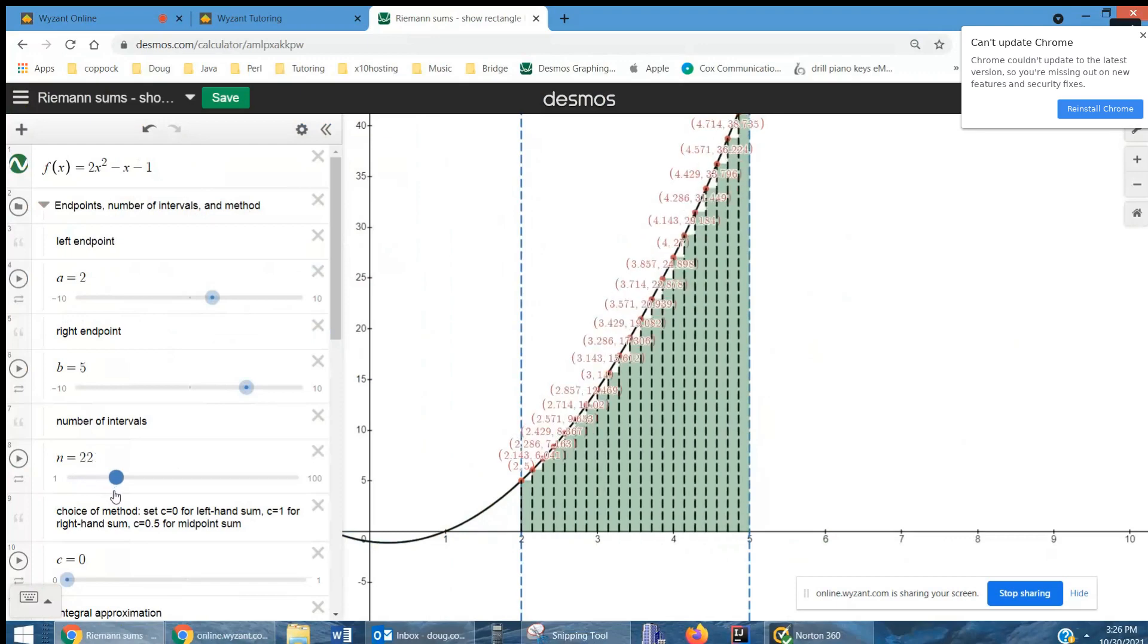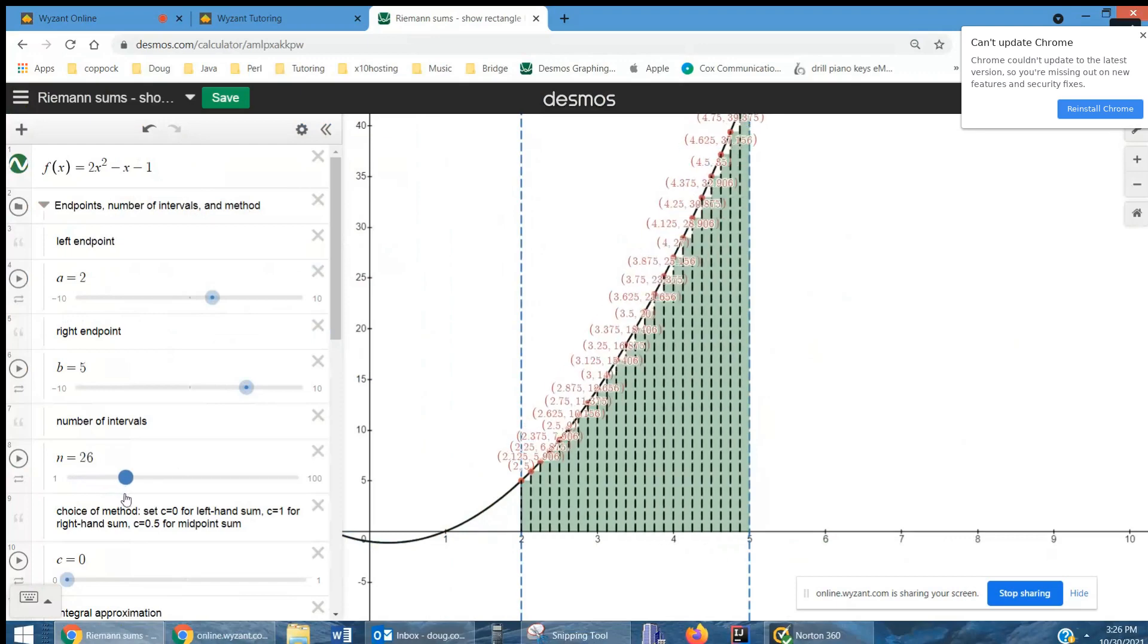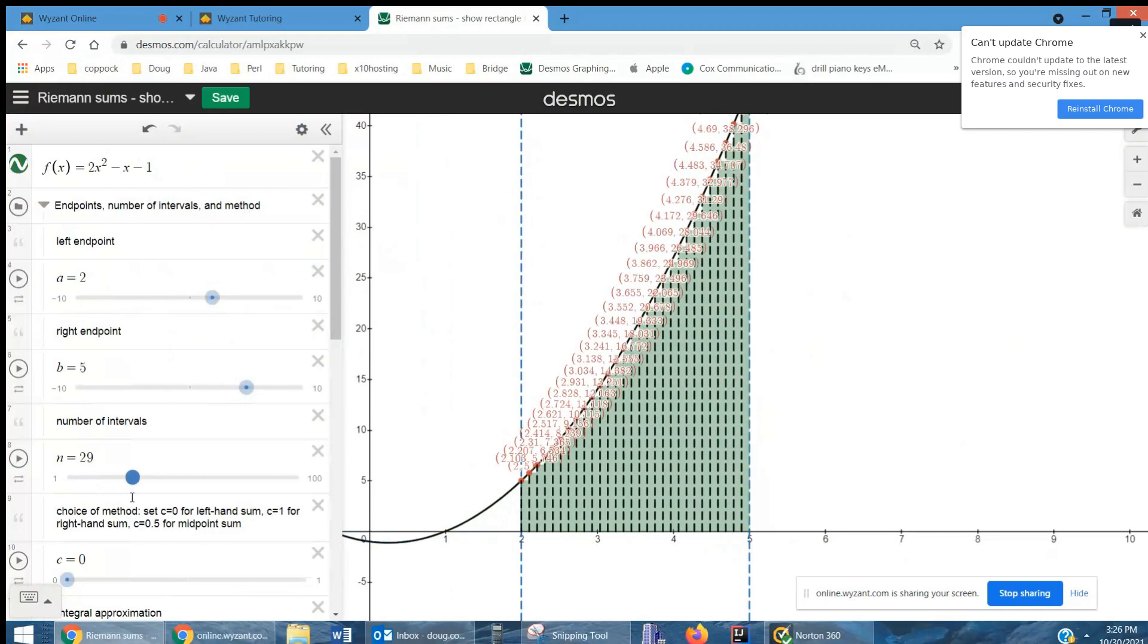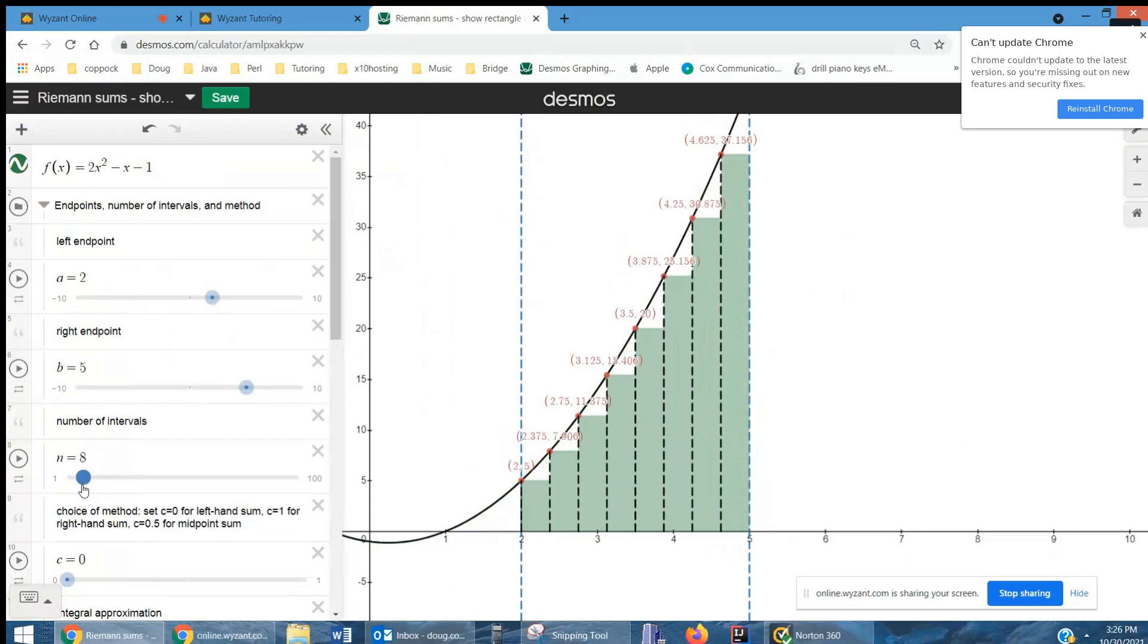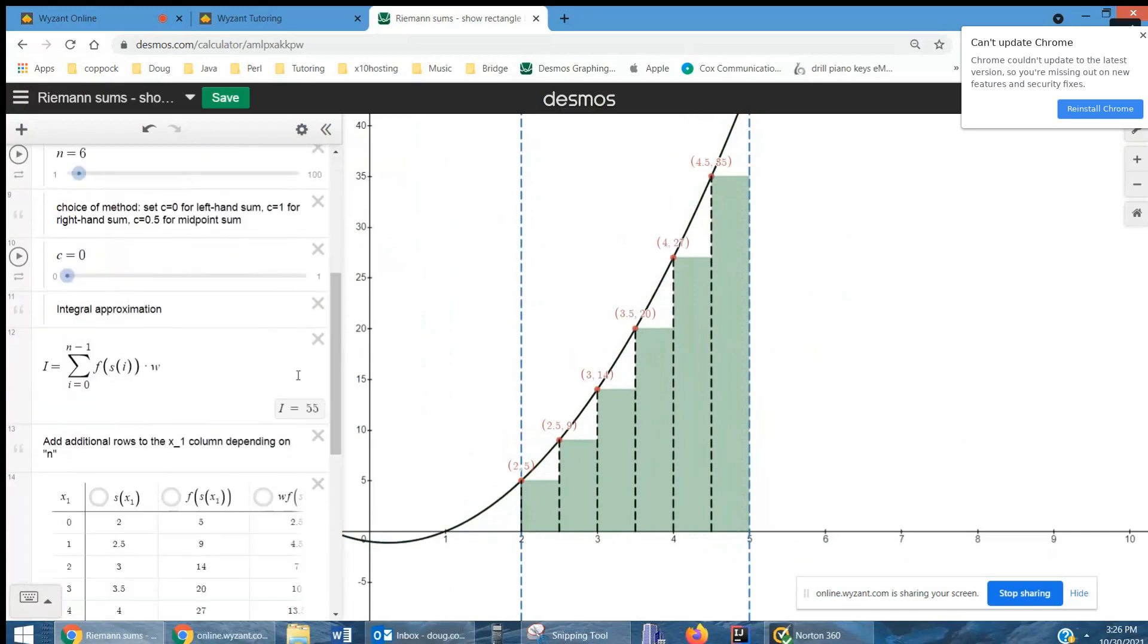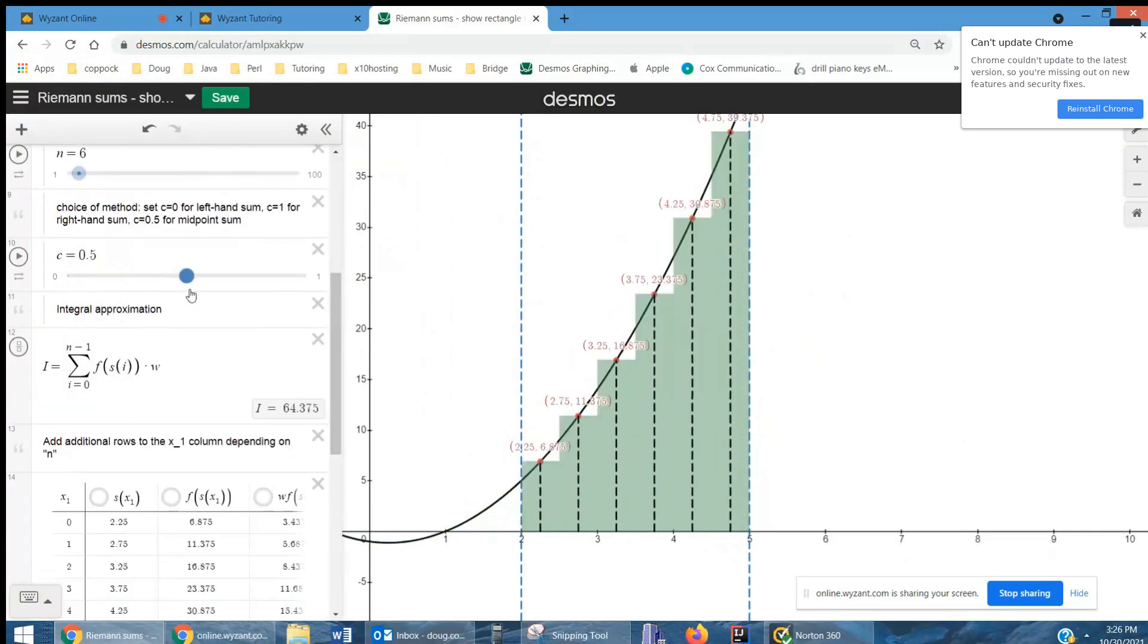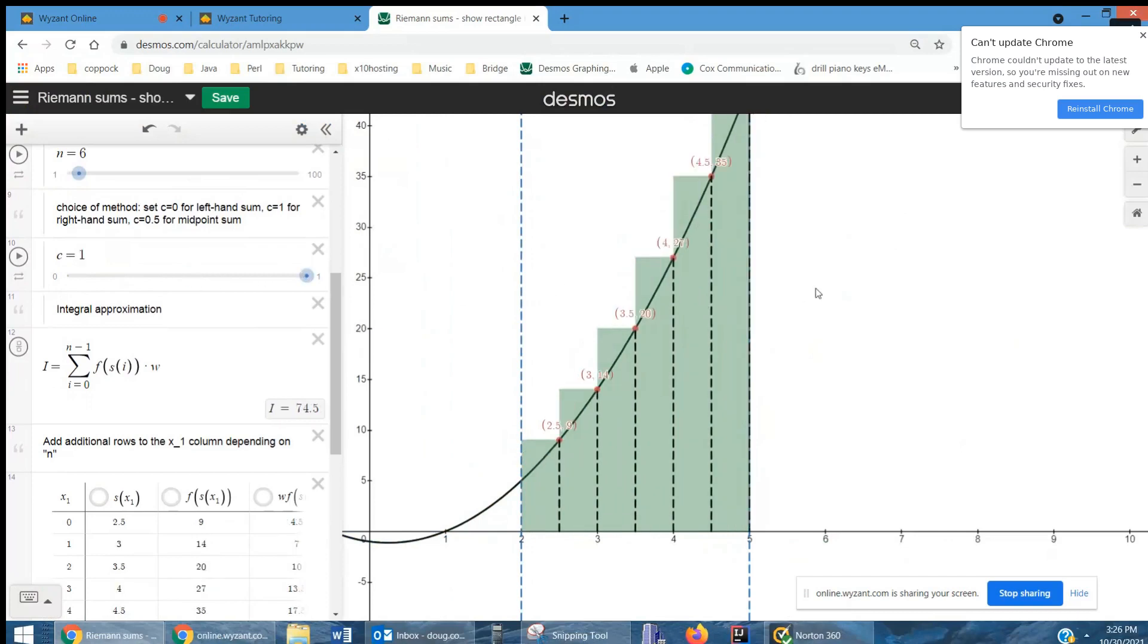And of course, that's what a definite integral is. We let the number of rectangles approach infinity, and we get closer and closer to the true area. And then the slider for C controls whether we have left-hand endpoints, midpoints, or right-hand endpoints.